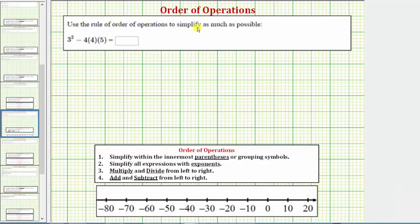We want to use the order of operations to simplify. The directions may also say evaluate the expression. We're given the expression three squared minus four times four times five.